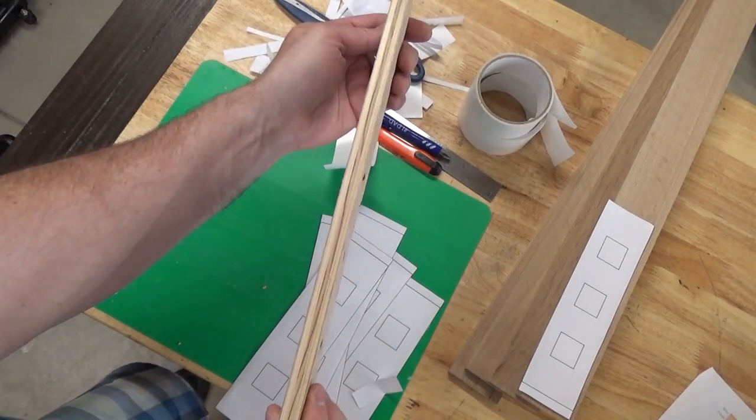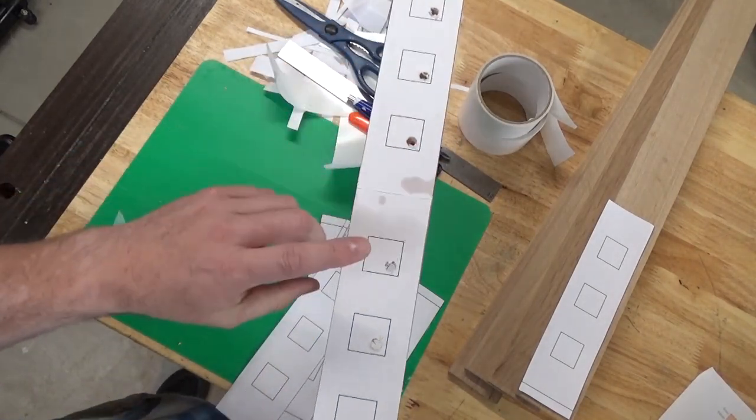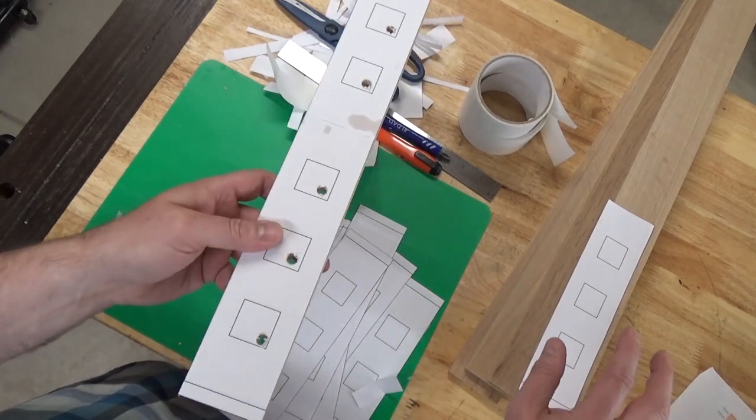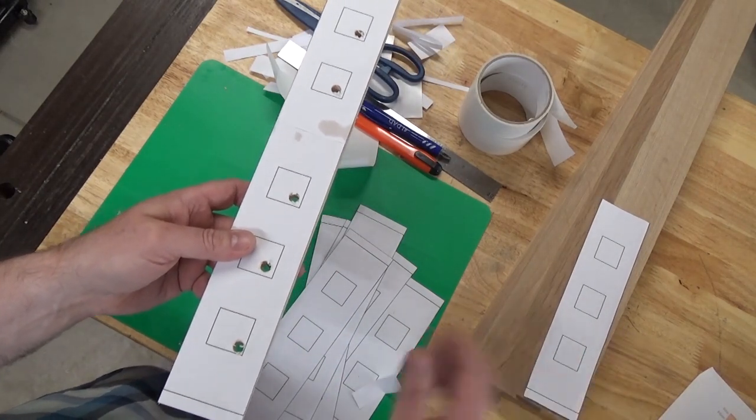I've got a practice piece here made out of plywood because I want to practice cutting out these squares before I attempt to cut out the squares on my expensive quarter sawn oak.